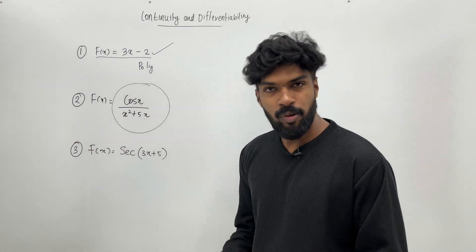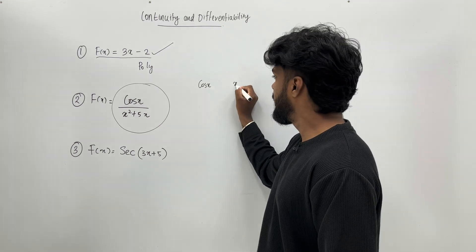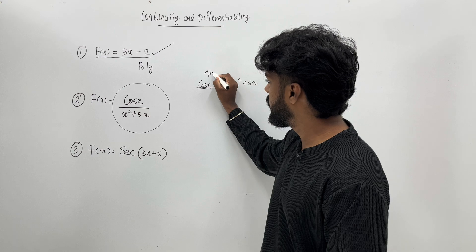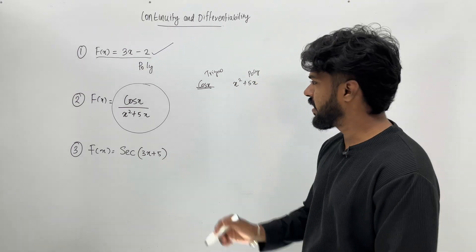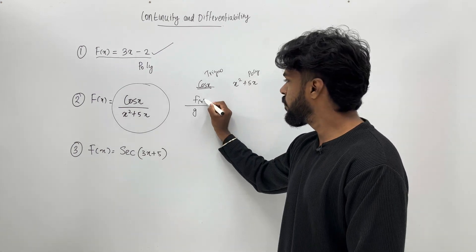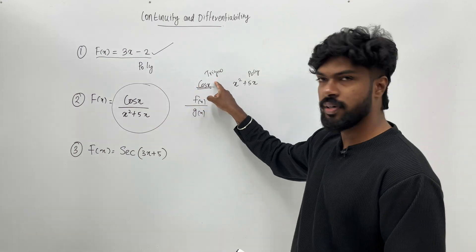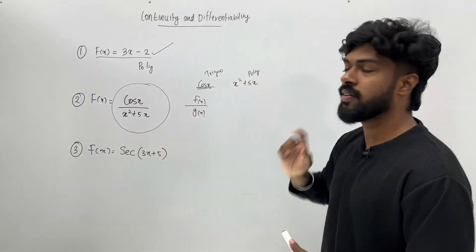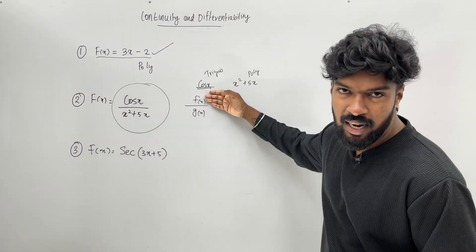Let's check the two functions. This function involves cos x and x squared plus 5x. Cos x is a trigonometric function — it's continuous. x squared plus 5x is a polynomial function. However, you need to check if the denominator equals zero before dividing.